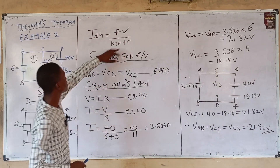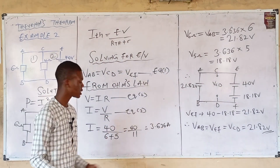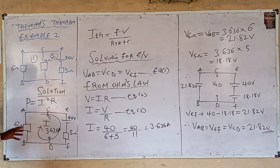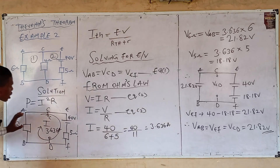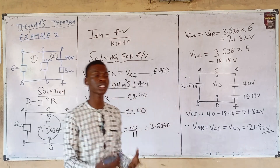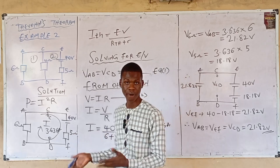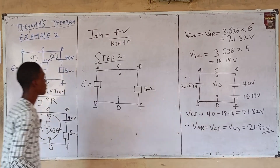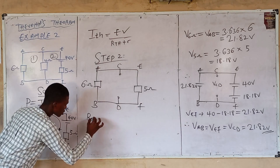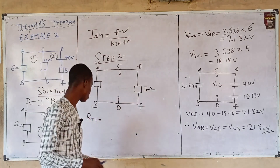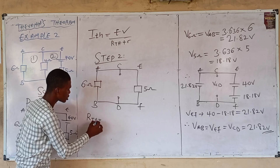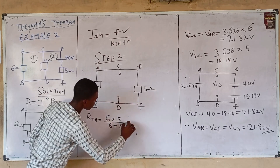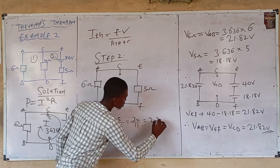Step 2: calculate the Thévenin equivalent resistance R_th. Come back to the short-circuited circuit and identify the resistors: you have a 6-ohm resistor and a 5-ohm resistor. Ask: are they connected in parallel? Yes, they are connected in parallel. So calculate the net resistance using the parallel formula.